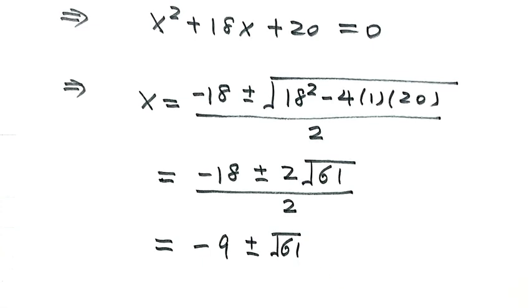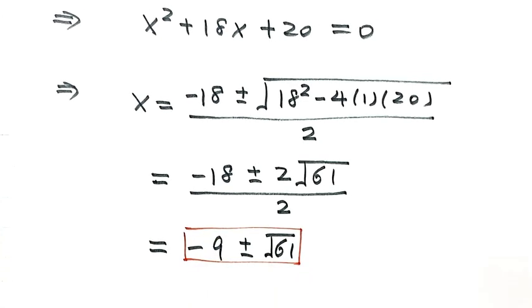So negative 9 plus or minus the square root of 61 are the solutions to this equation. Thanks for watching.